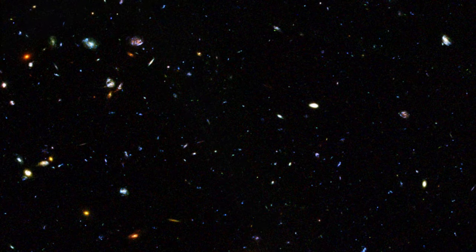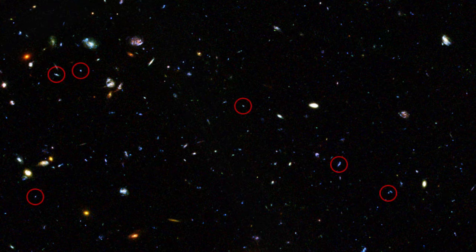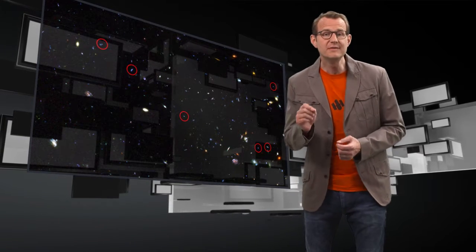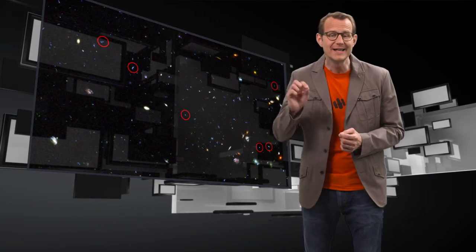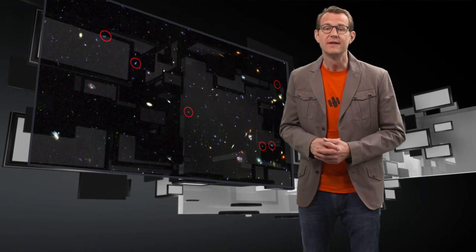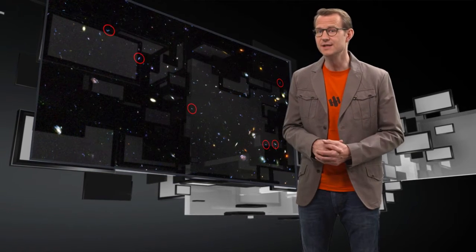And indeed, when we look at very distant galaxies in the early Universe, we can see that they're forming stars at about ten times the rate than today's galaxies. With the help of Hubble, we've even been able to trace out the entire history of star formation of the Universe. And it turned out that most of the stars were formed between two and six billion years after the Big Bang.